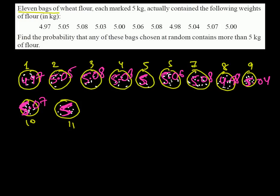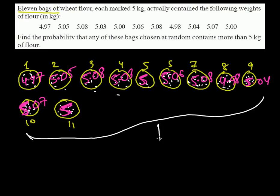Now what we have to find out is the probability that any of these bags chosen at random contains more than 5 kg. You are selecting one bag — it could be any one of them — and we want to know the probability that it will contain more than 5 kg.